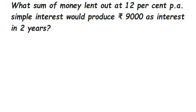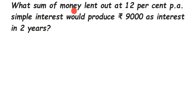Here's a question from comparing quantities: what sum of money lent out at 12% per annum simple interest would produce rupees 9,000 as interest in two years? Rate is given as 12% per annum, simple interest is 9,000, and time is two years.